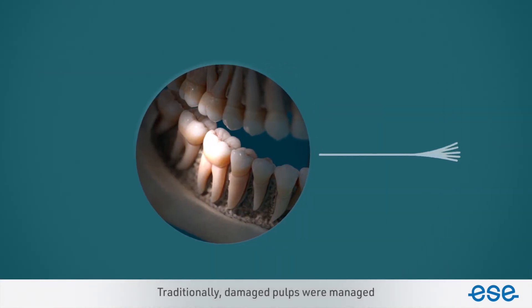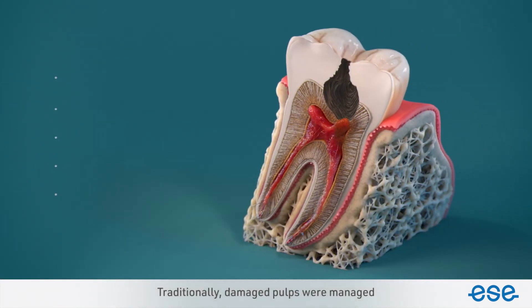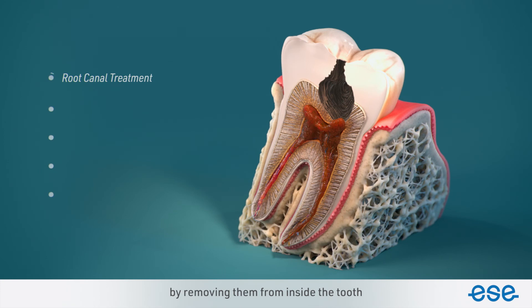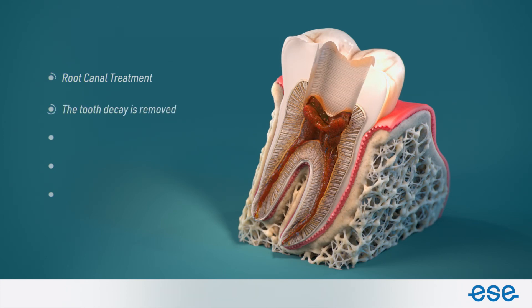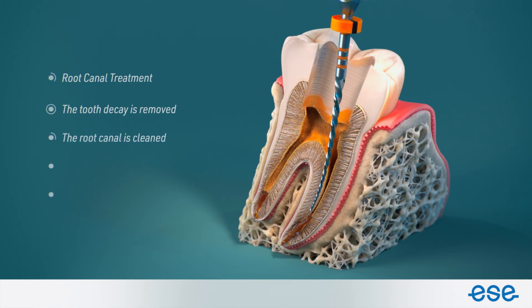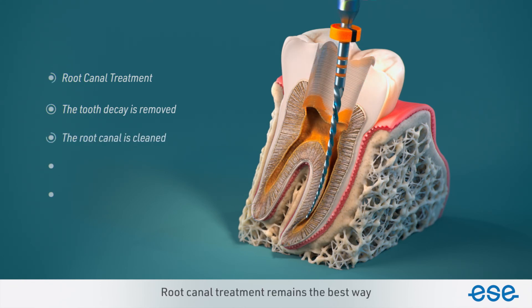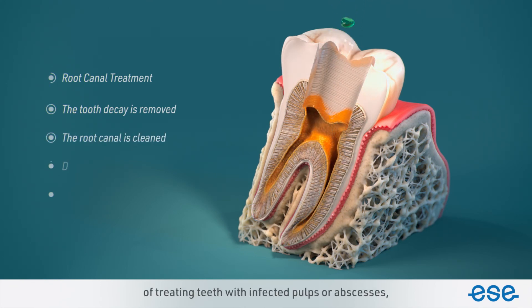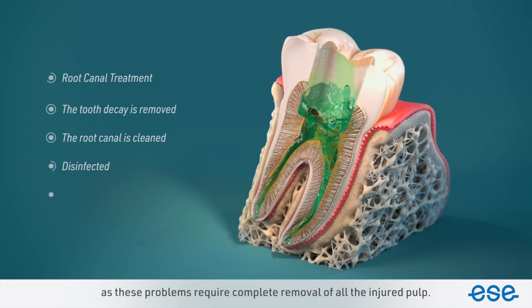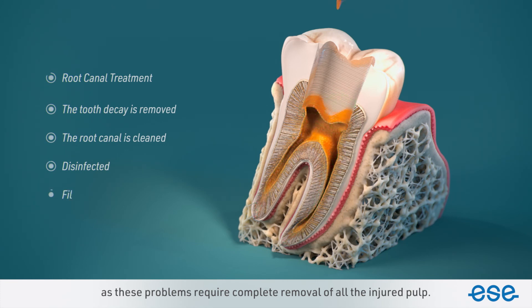Traditionally, damaged pulps were managed by removing them from inside the tooth and then carrying out root canal treatment. Root canal treatment remains the best way of treating teeth with infected pulps or abscesses, as these problems require complete removal of all the injured pulp.